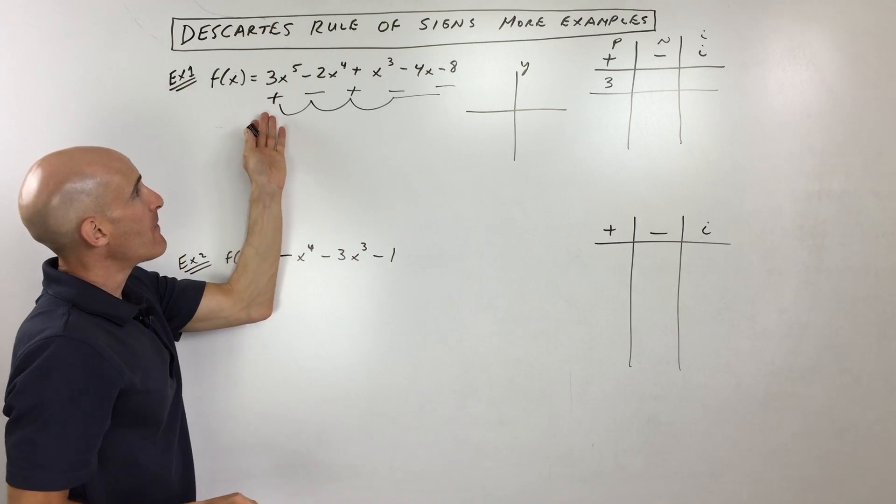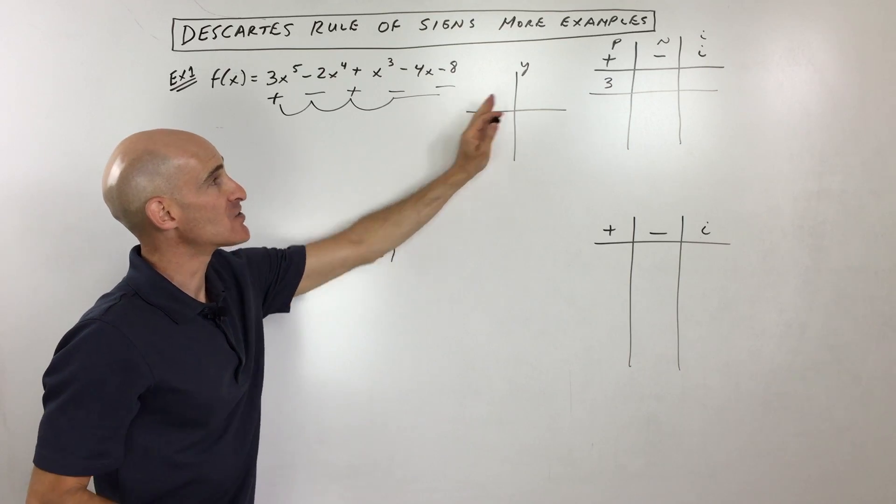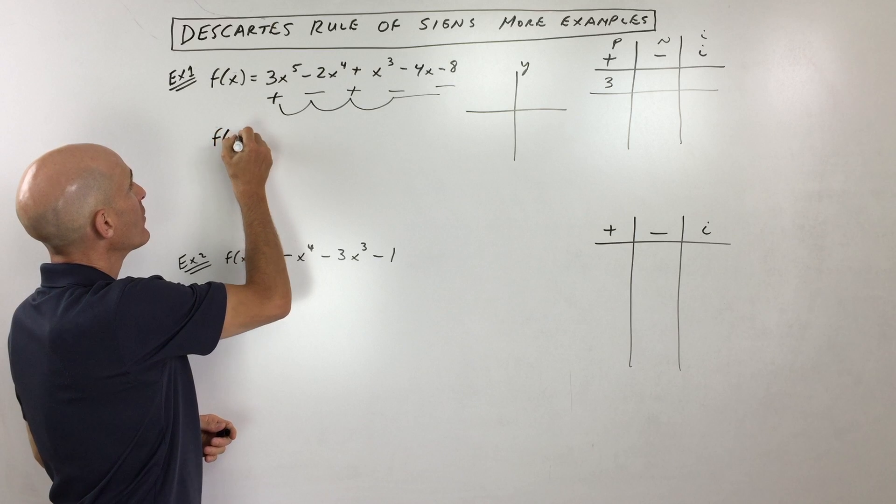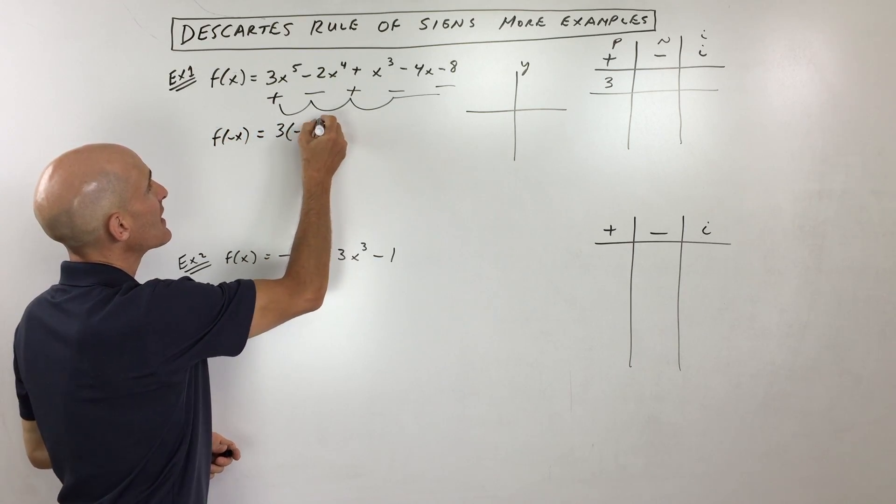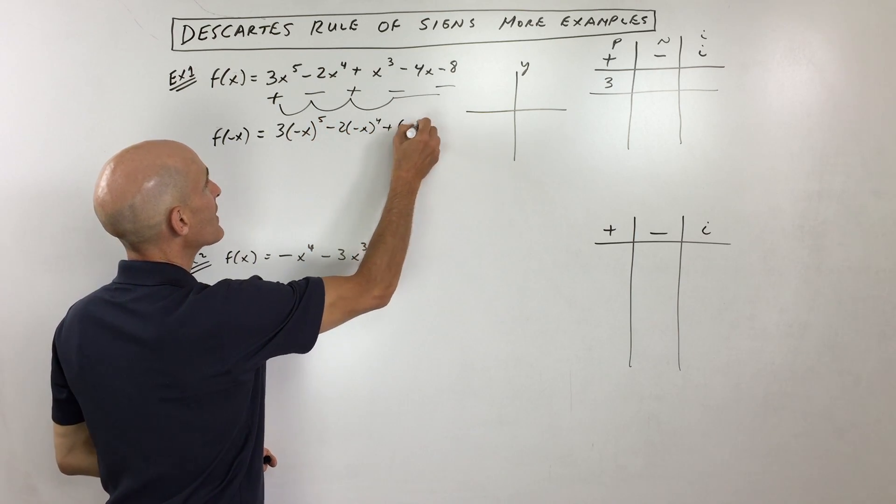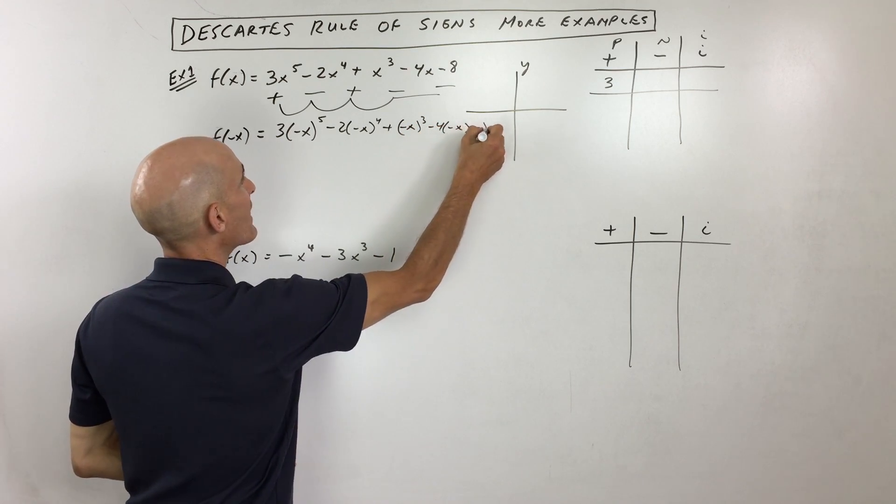Now if we want to analyze the maximum times that it crosses the x-axis over here in the negative range, to the left of the y-axis, what we do is replace x with negative x. So let me go ahead and do that for us here. We've got 3 times negative x to the fifth minus 2 times negative x to the fourth plus negative x cubed minus 4 times negative x minus 8.